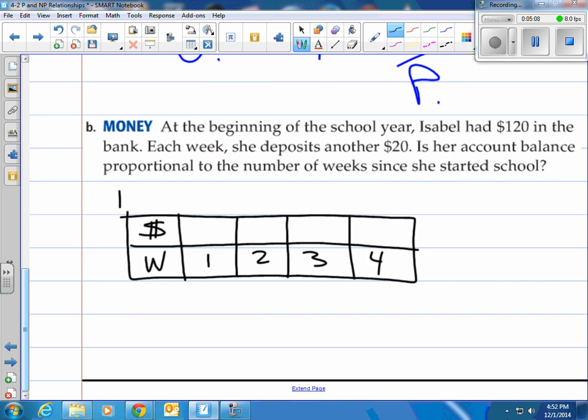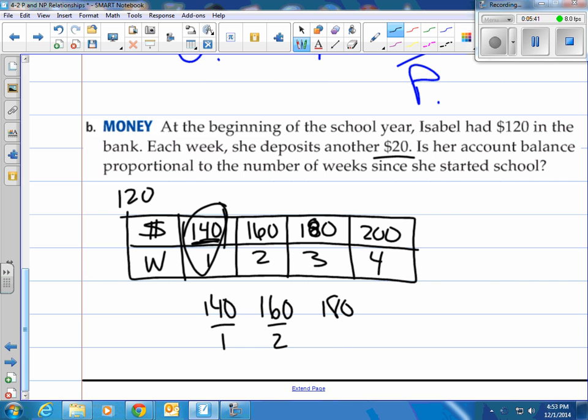Well, she started out with $120, right? So after the first week, she's going to have $140 because she's going to put $20 in. And then the second week, she'll have $160, then $180, and then $200. Is her account balance, and the balance would be how much she has in the bank at any one time, proportional to the number of weeks since she started school? Well, this one right here would be $140 over 1, this is $160 over 2, $180 over 3, and $200 over 4.